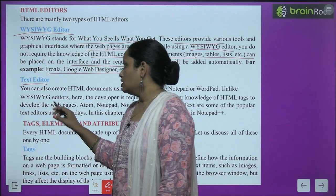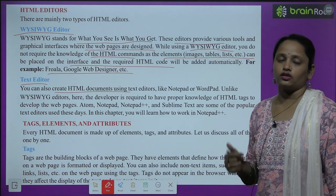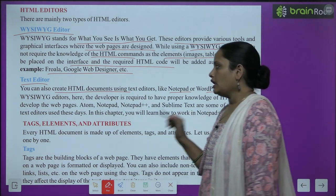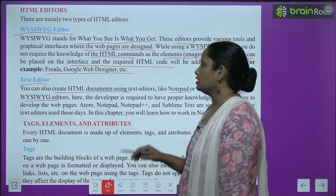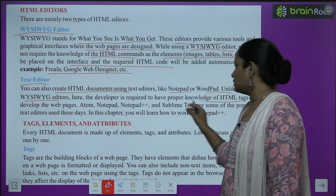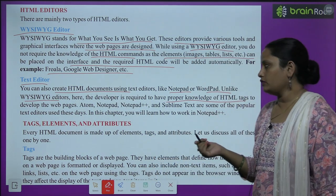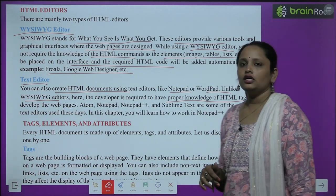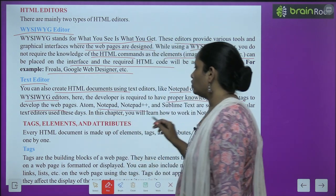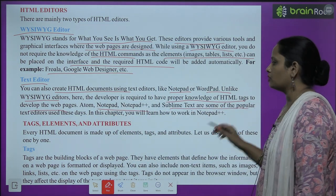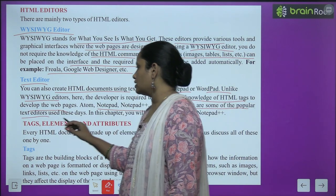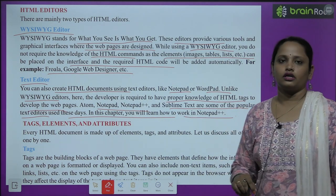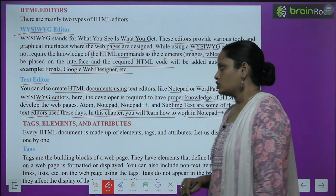The second type is the text editor. You can create HTML documents using a text editor such as Notepad or WordPad. Unlike the WYSIWYG editor, here the developer is required to have proper knowledge of HTML tags to develop web pages. Atom, Notepad, Notepad++ and Sublime Text are popular text editors. In this chapter, you will learn how Notepad++ works.